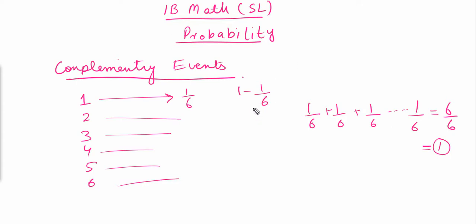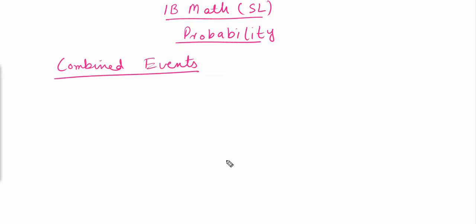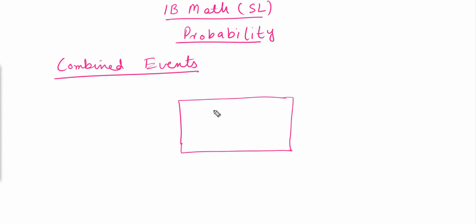Now let's discuss combined events. To do so, I'm going to draw a Venn diagram. In this Venn diagram, let's suppose two events are taking place: event A and event B.